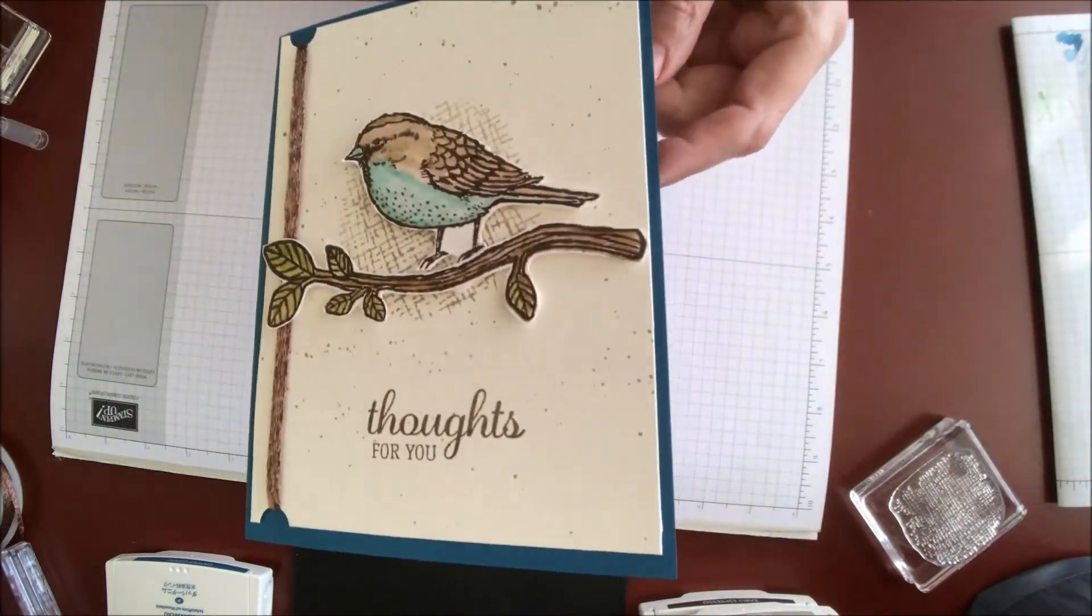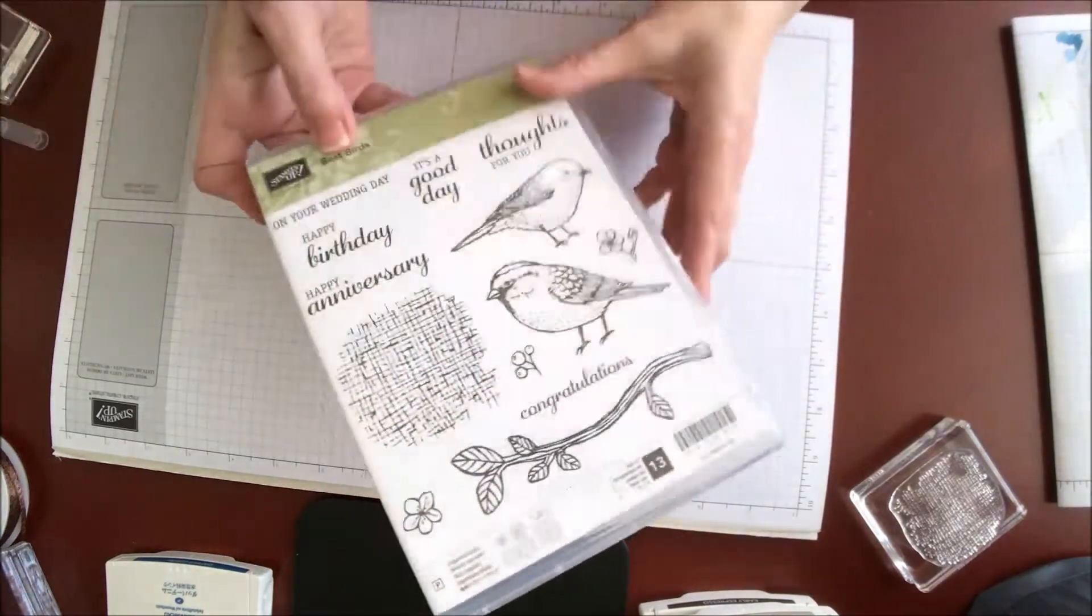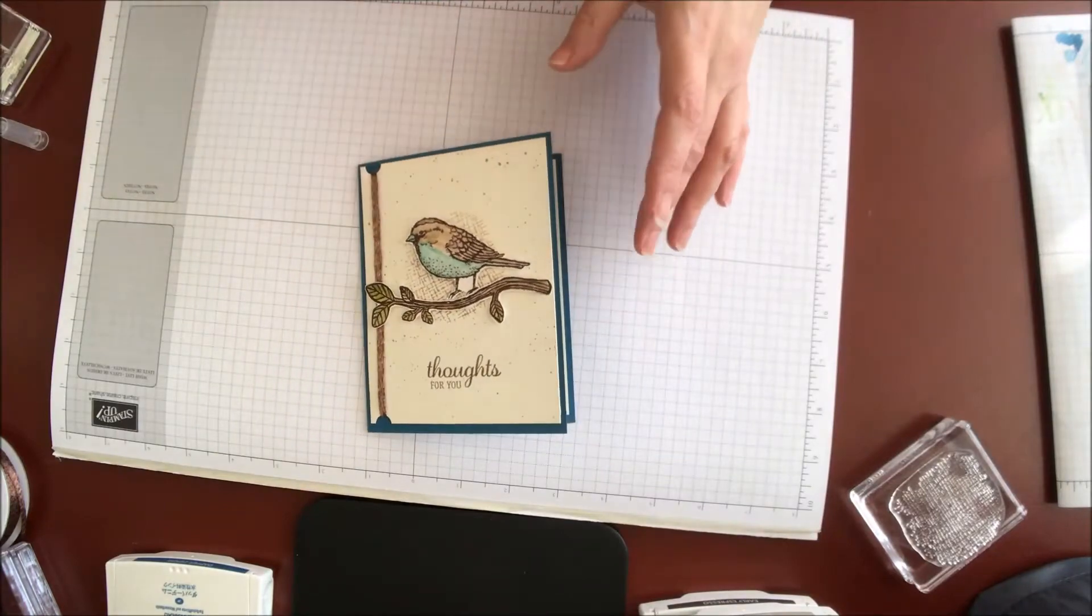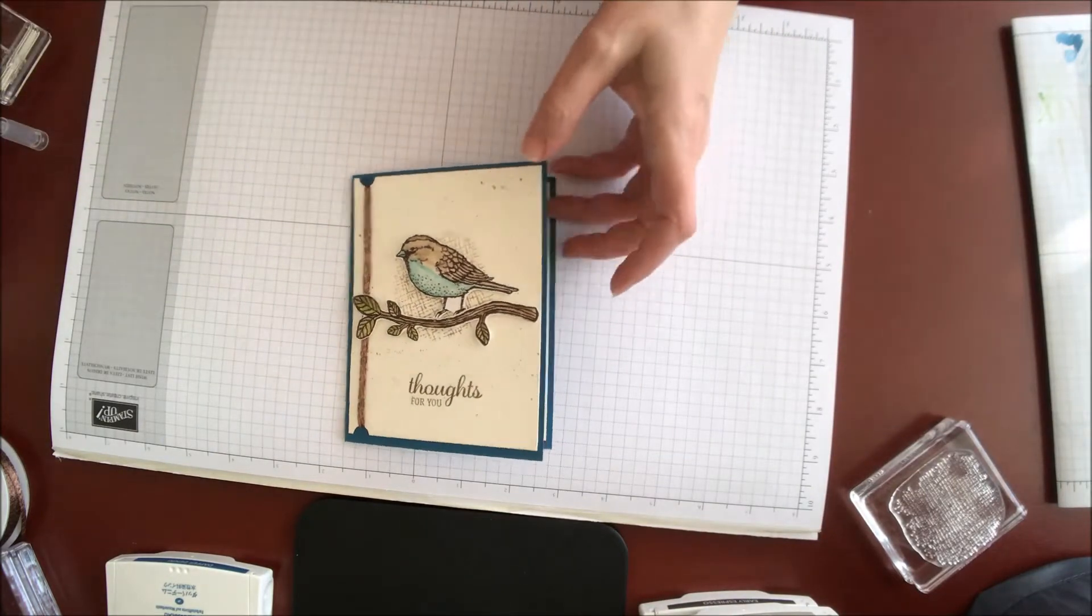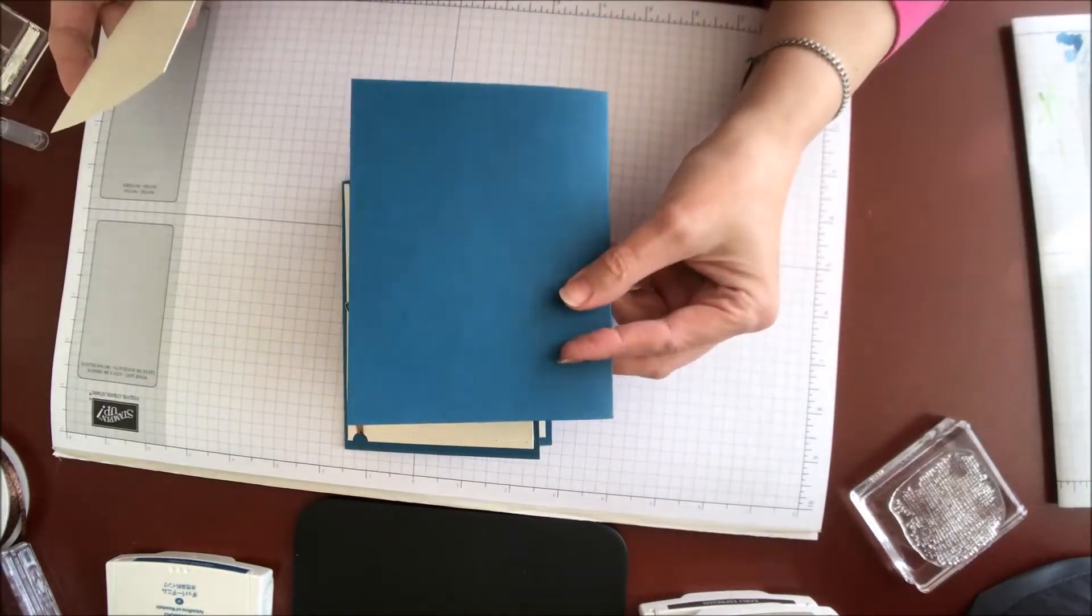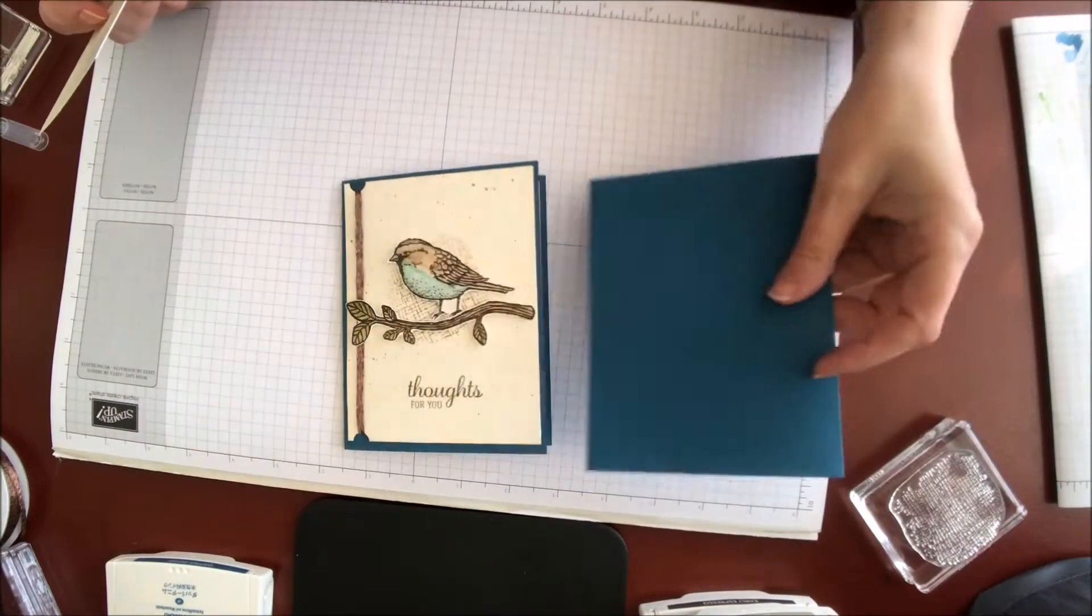This is from the Best Birds stamp set, which I'll show you right here. I'm going to change this card up a little bit today. I've gone ahead and done a few steps just to save some time. The card base we're using today is dapper denim. Now this is a retiring color. You have until May 31st while supplies last.